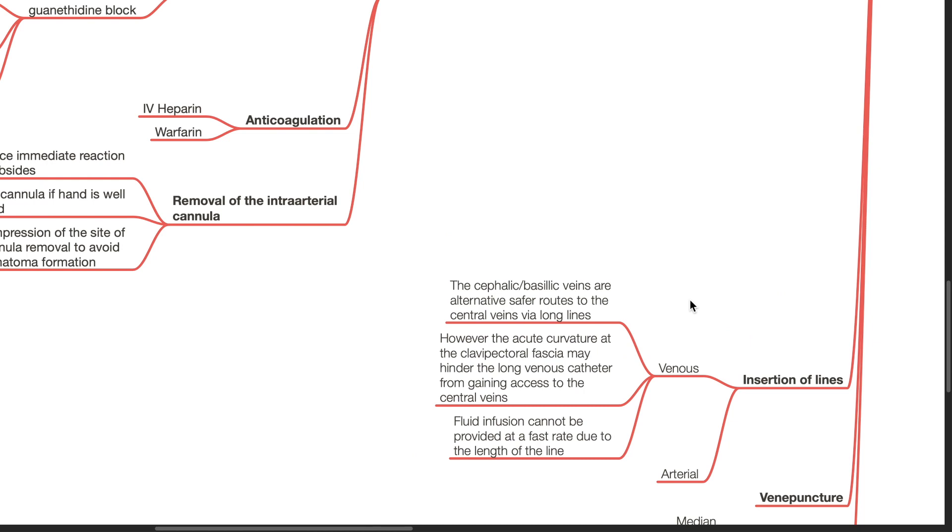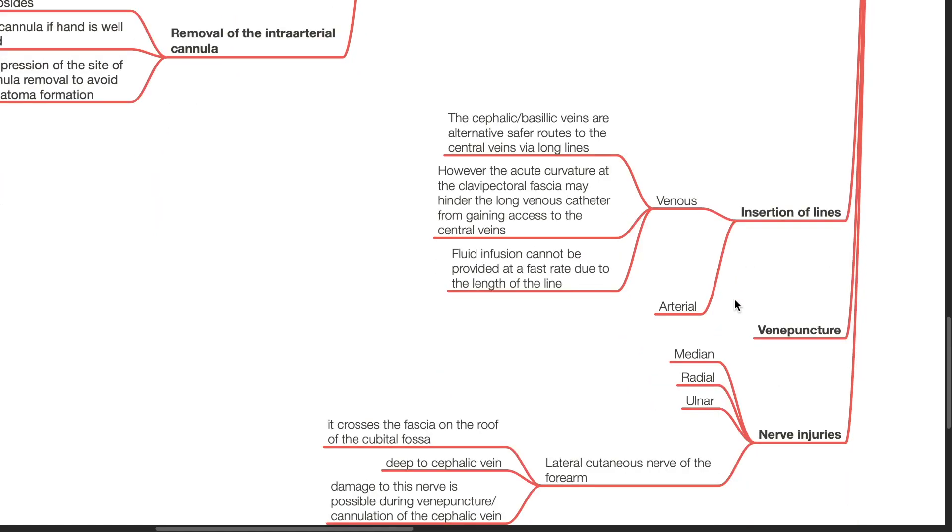Insertion of lines. The cephalic or basilic veins are alternative safer routes to the central veins via long line insertion. However, the acute curvature at the clavipectoral fascia may hinder the long venous catheter from gaining access to the central veins. Fluid infusion cannot be provided at a fast rate due to the length of the IV line.